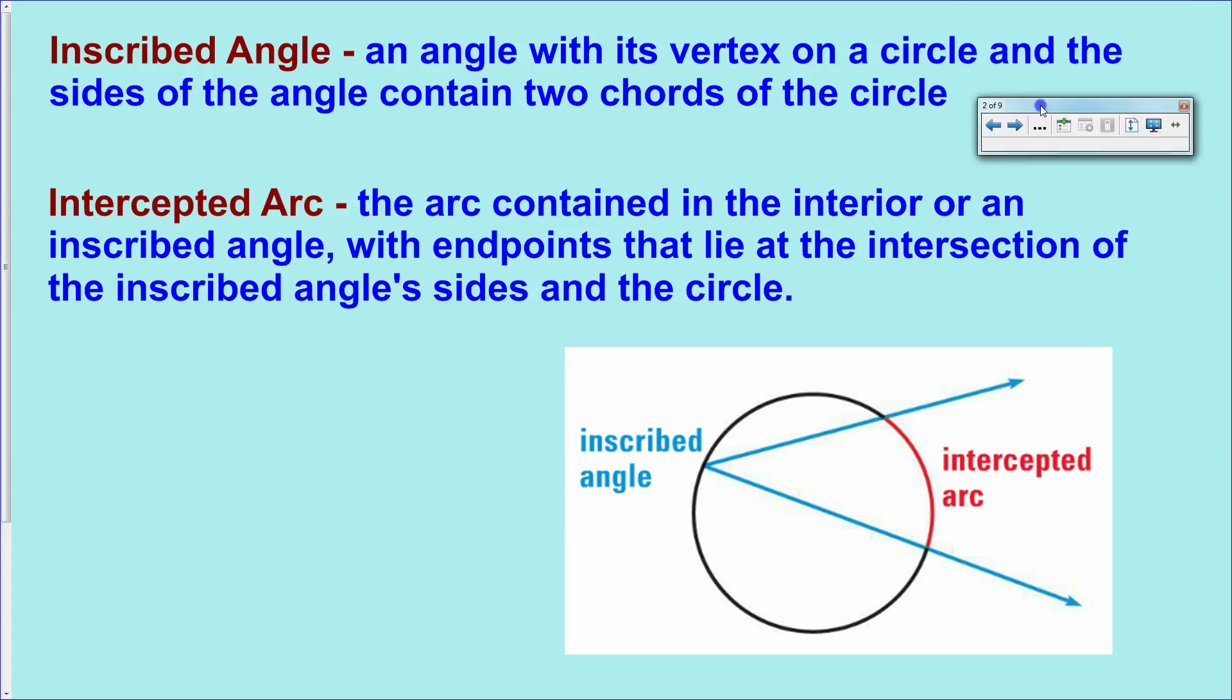First up, a little bit of vocab again: inscribed angle and intercepted arc. These are extremely wordy definitions of which a picture is totally sufficient. An inscribed angle is an angle with its vertex on the circle and the sides of that angle contain two chords of the circle in which the vertex belongs. That's what it looks like right there.